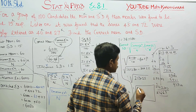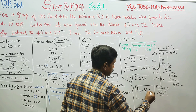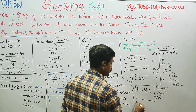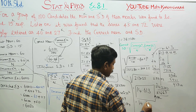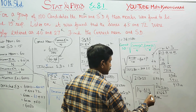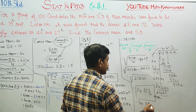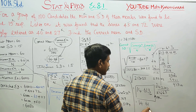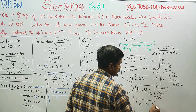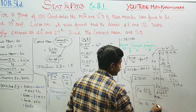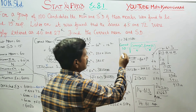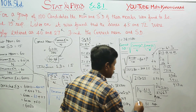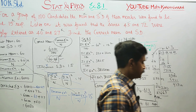Your answer is 14.613 approximately. Rounding to two decimal places, the corrected standard deviation is approximately 14.61. This is your corrected standard deviation. Thank you.